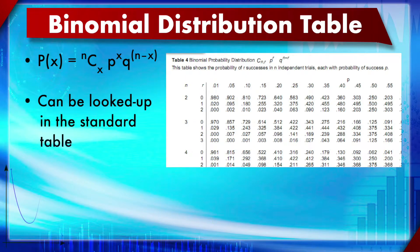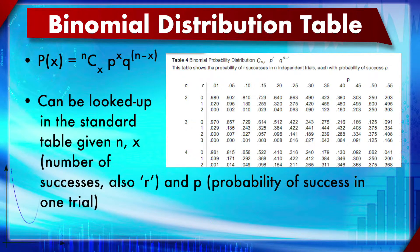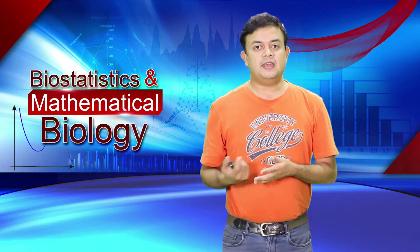Binomial distribution tables are available so you do not need to plug into the binomial equation at all. If you know p, q, and r (the number of successes), just look at the appropriate cell of the table to find the exact probability of that outcome. If you are comfortable with online calculators, I suggest using those rather than the table.